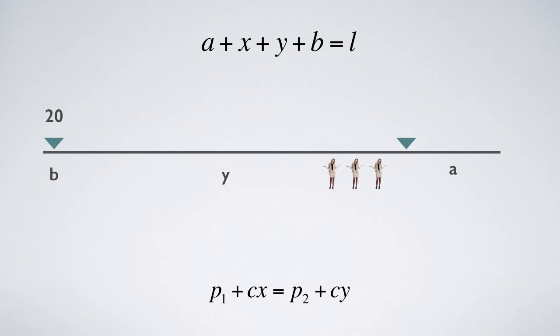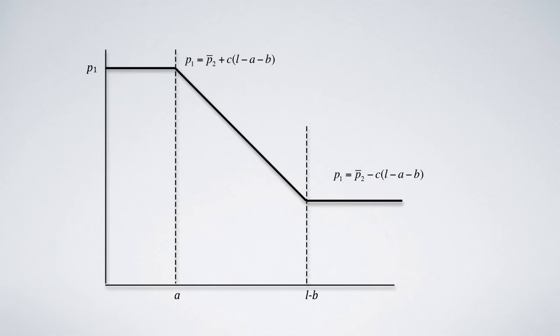The problem is, what is the best or optimal price that seller 1 can set? This is the demand faced by seller 1, given a P2.